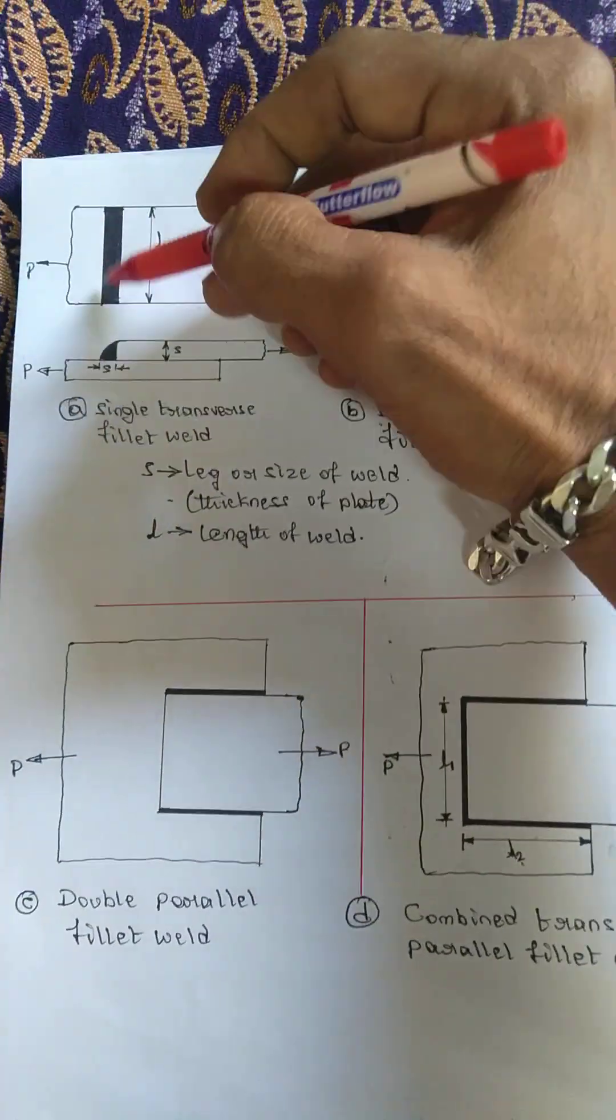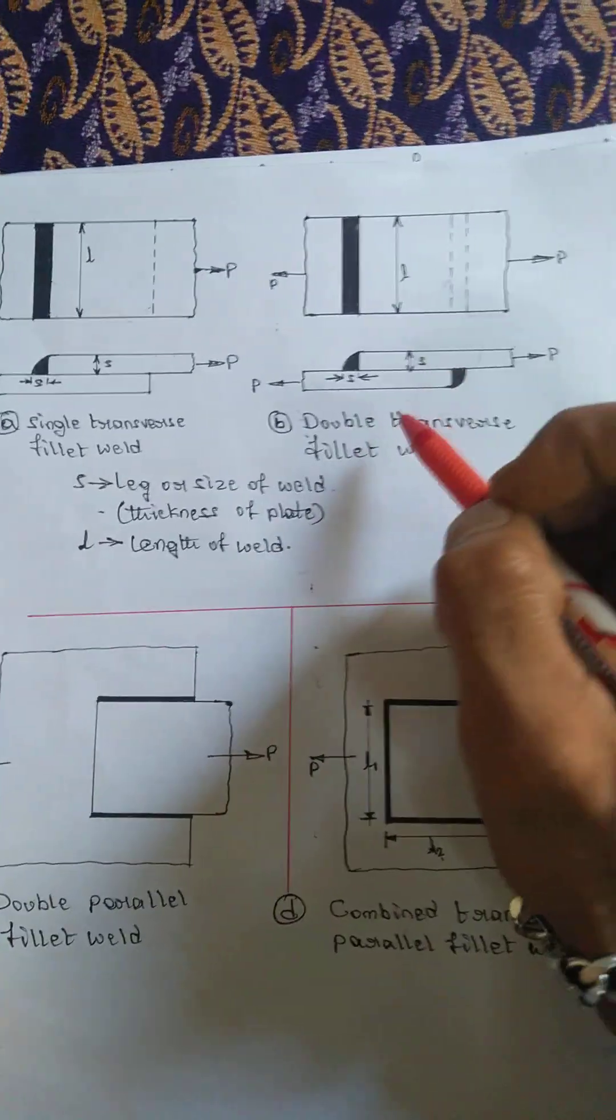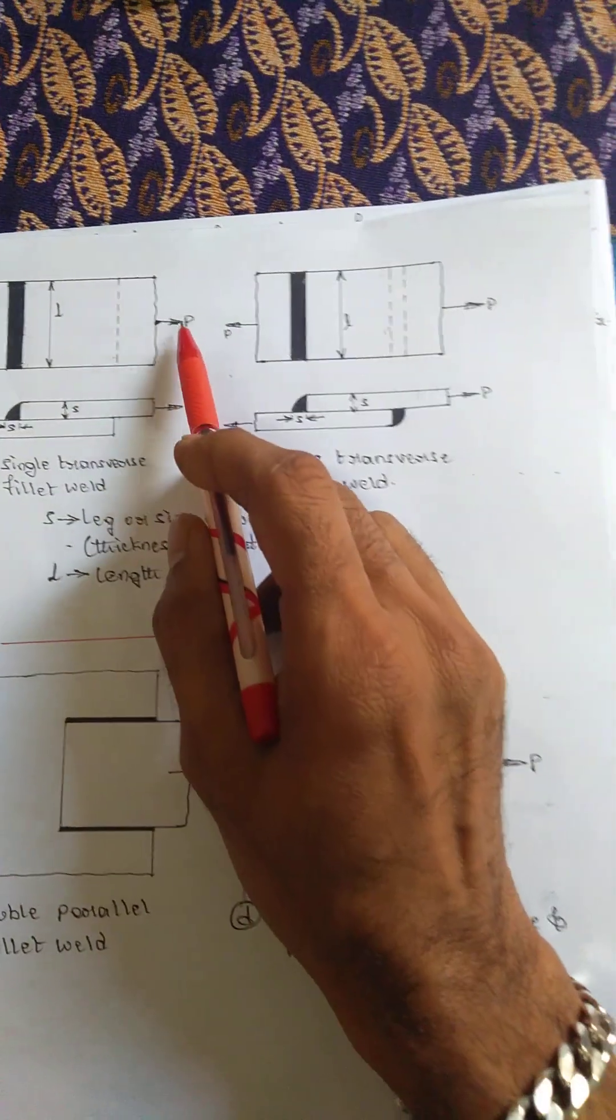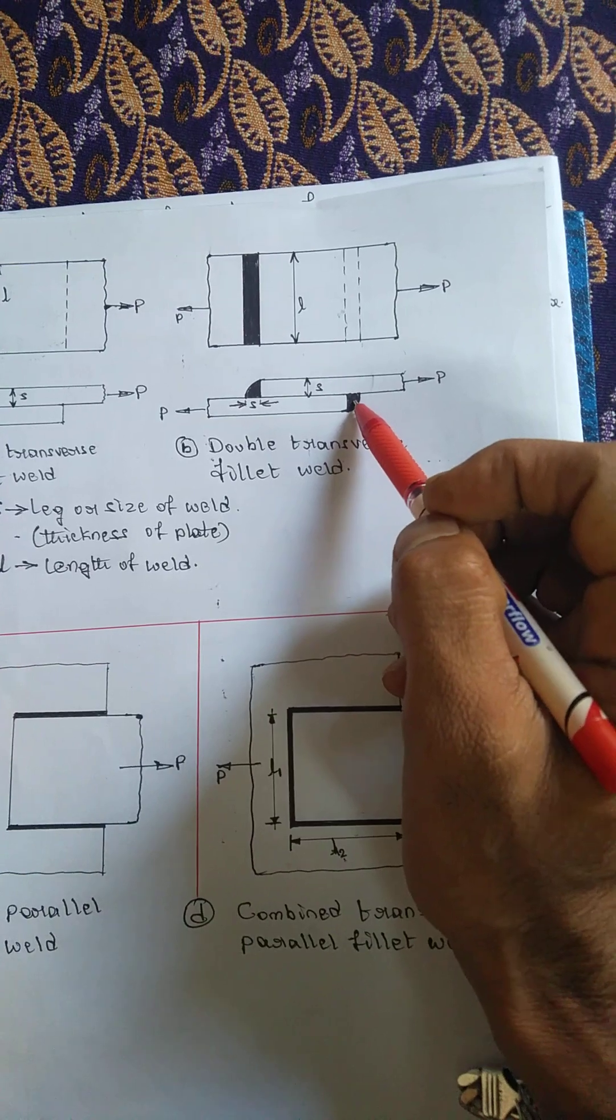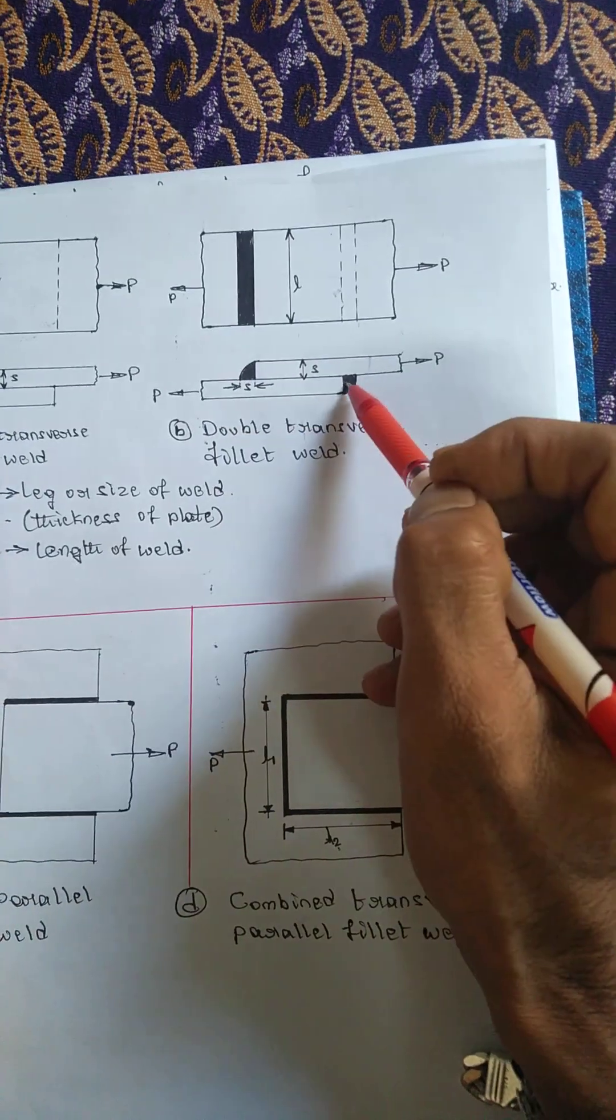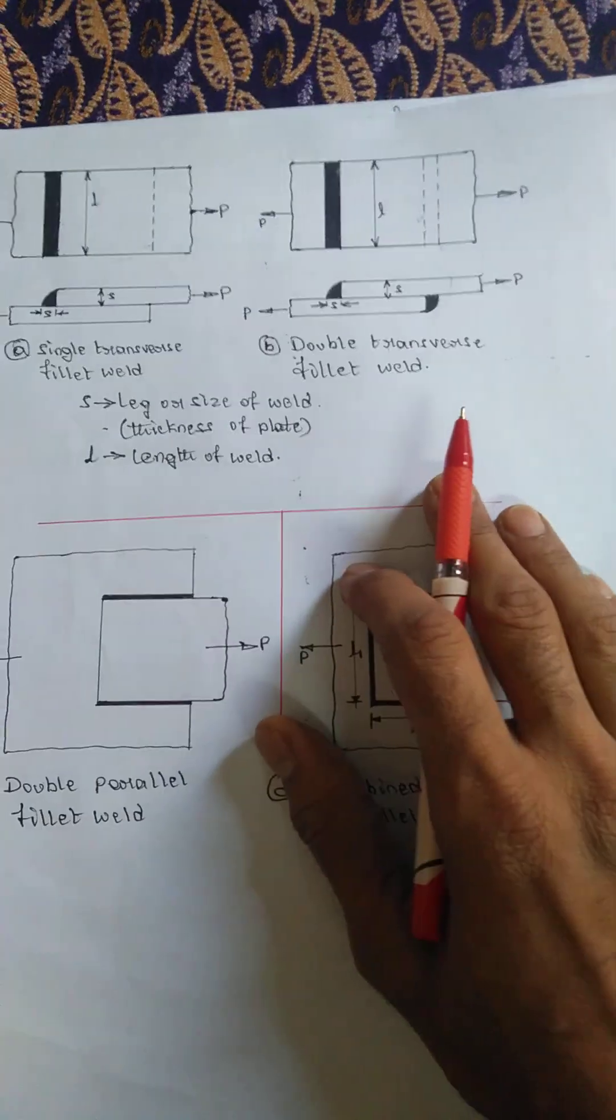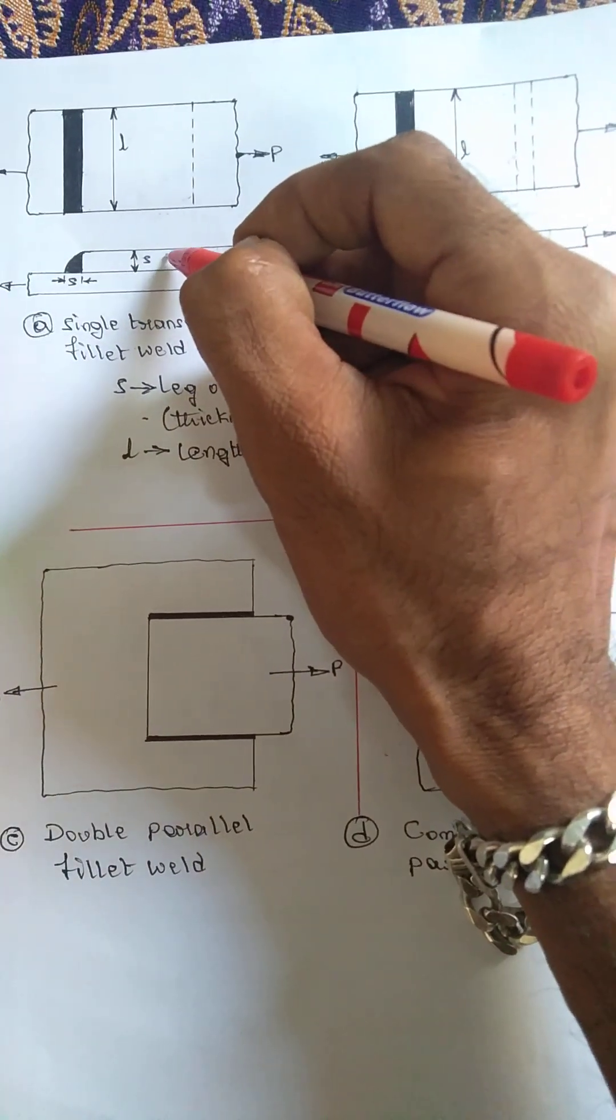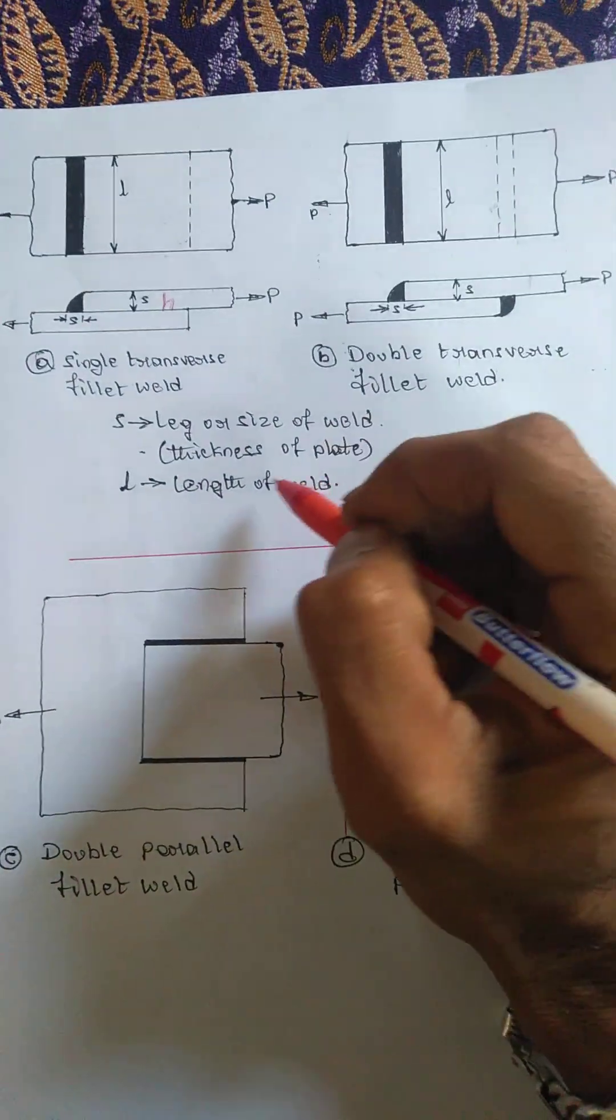Next is double transverse fillet weld, where P is the load applied. In this double transverse fillet weld, two sides are welded - here and here - that's why it is called double transverse. Here I have taken from handbook as H, which is the length of the weld or width of the plate.